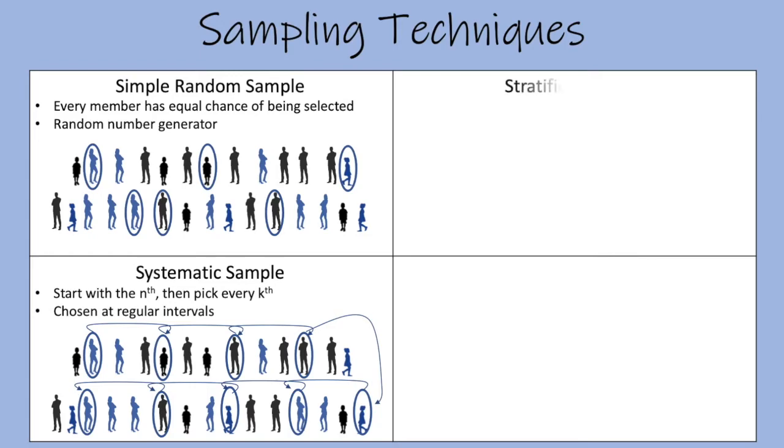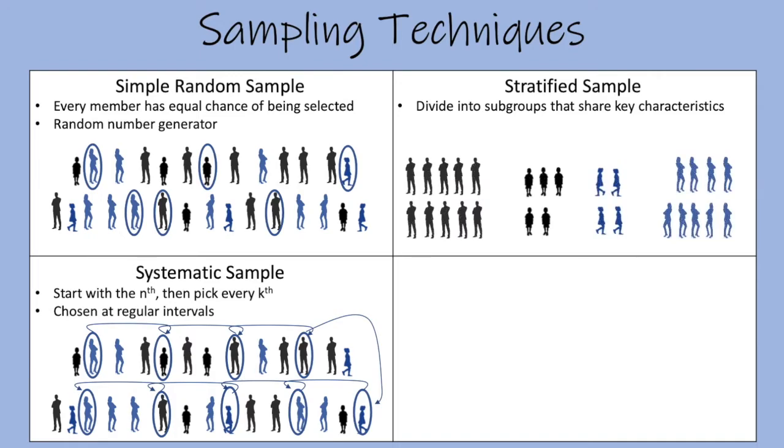The next type of sample is called the stratified sample. So in a stratified sample, we'll divide the population into subgroups that share key characteristics, perhaps like this. And then based on proportions, we'll take a random sample from each group.